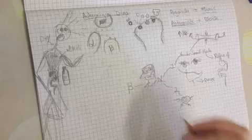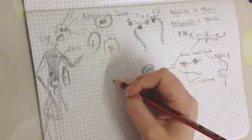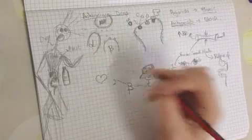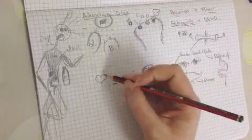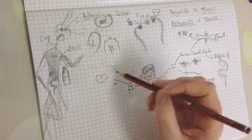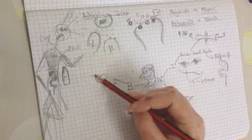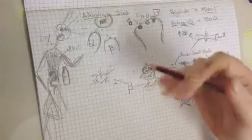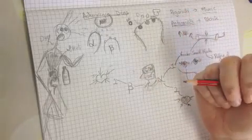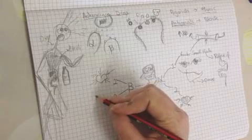Then we've got the beta subtypes. Beta one is on the heart. You only have one heart, so this is easier to remember—I only have one heart and it's going to beat only for you. That of course increases force and rate.